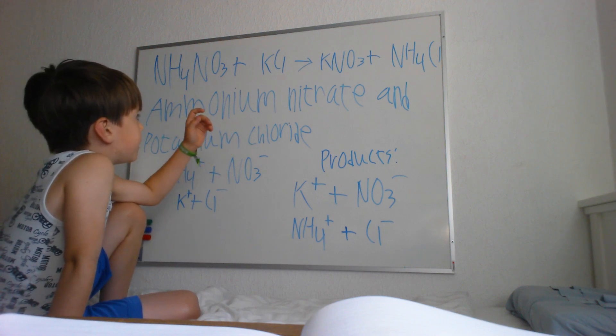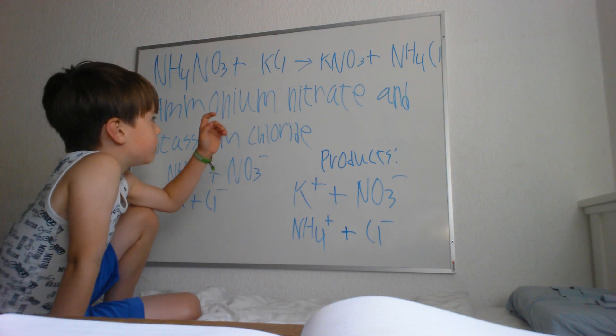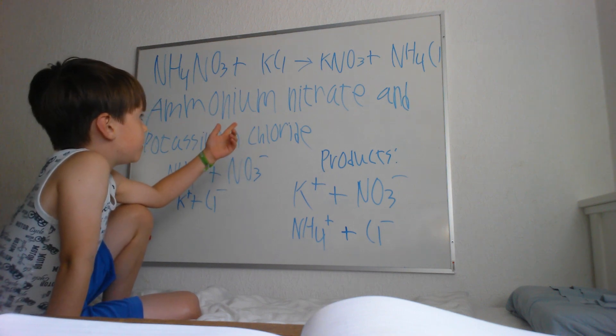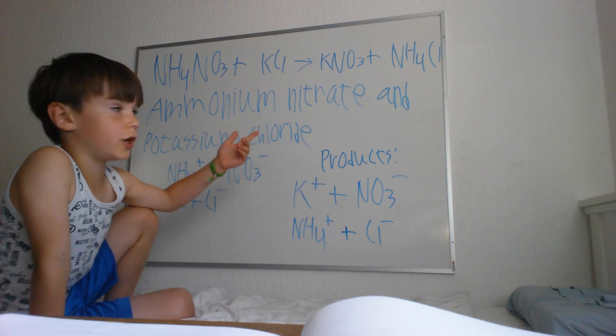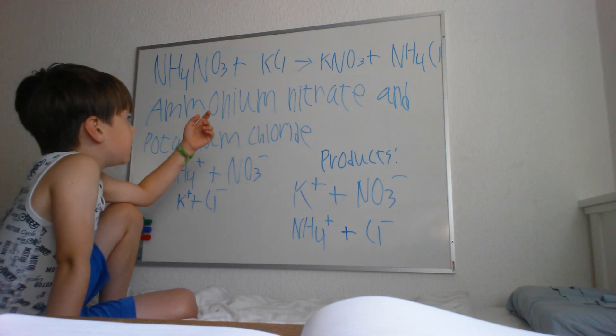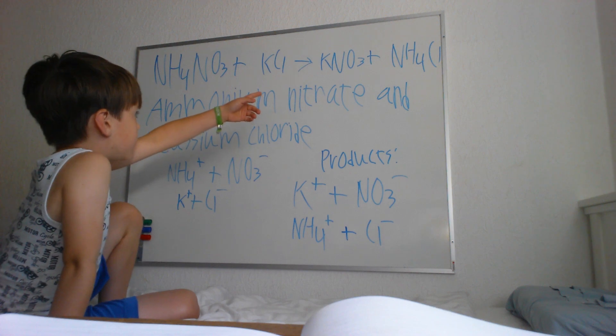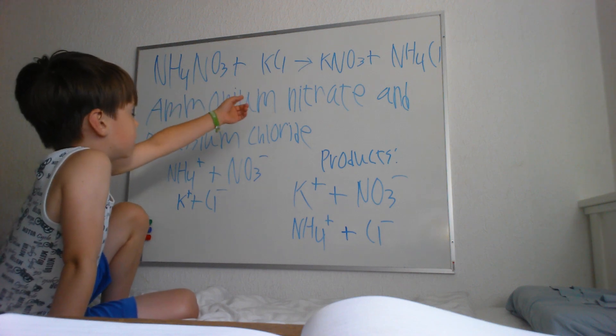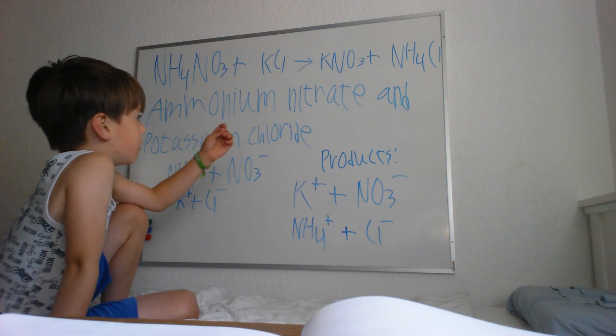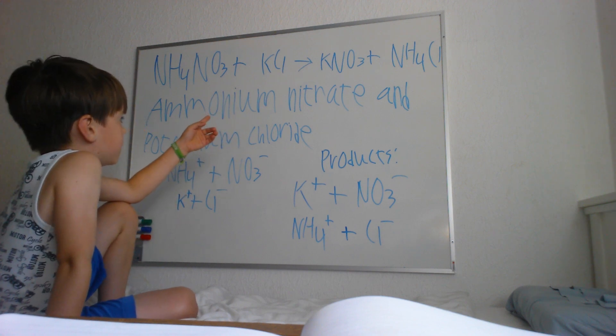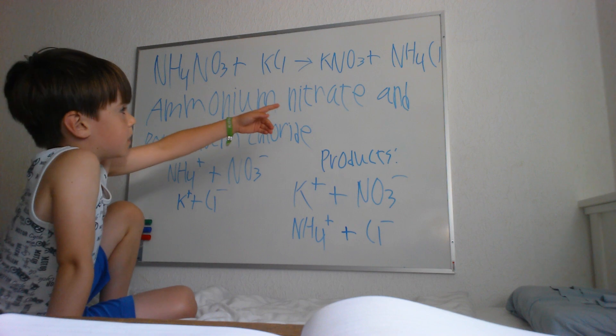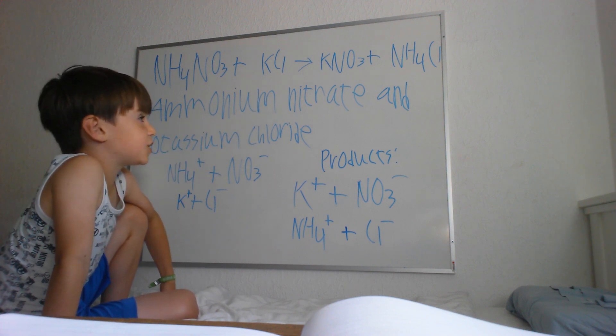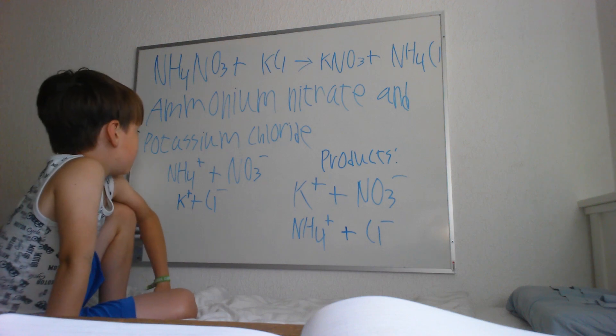Now, we also need to think about the other chemicals or elements that are formed. If it was potassium chloride and ammonium nitrate, then the ammonium would bond together with the chlorine to form NH4Cl, or NH4+ Cl-.